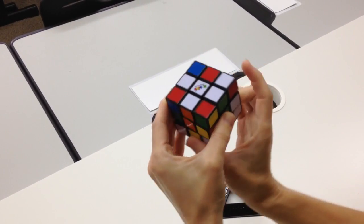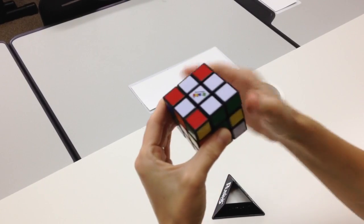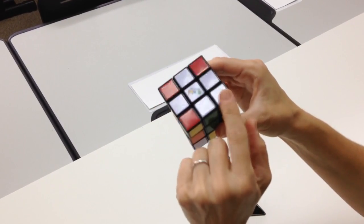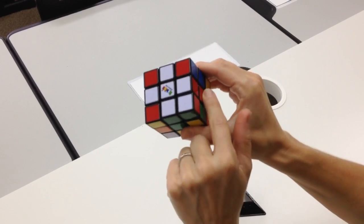Right down, bottom left, right up, bottom right. And now I have my corner positioned and oriented correctly.